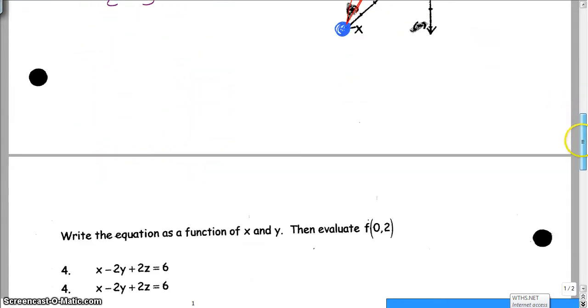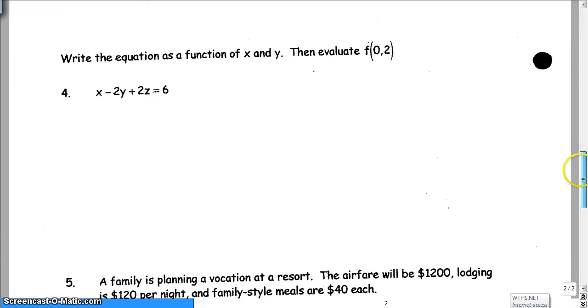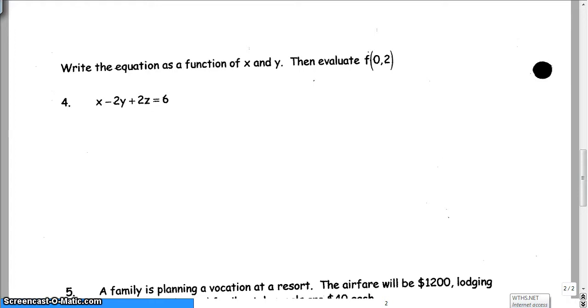Now we're going to move on and we're going to talk about function notation. But now we're going to be doing it for a function of X and Y. But you know what? You might be able to do this on your own. Basically solve for Z. Go ahead and pause it and try. So let's see if you got it right. First thing you need to do is get Z on this side only. So you're going to have 2Z is equal to negative X plus 2Y plus 6. Divide everything by 2. And Z is equal to negative 1/2 X plus Y plus 3.